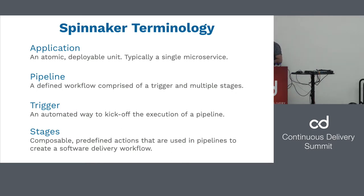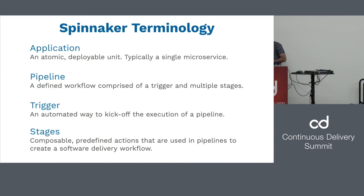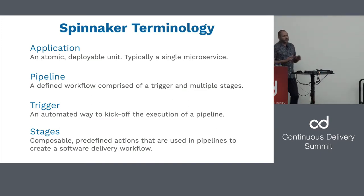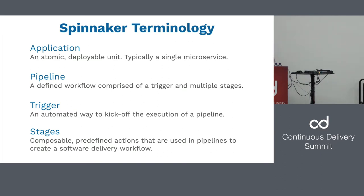A pipeline is a defined workflow of a trigger — something that automatically executes the pipeline — and multiple stages put together. The trigger is an automated way to kick off the pipeline: for example, a git commit, pushing something to an S3 bucket, pushing something to JFrog, or a container to a Docker registry. Stages in Spinnaker are different from Jenkins stages — they are predefined actions used in the pipeline to create the workflow. You don't write code for these stages; they're all predefined. You just express and configure your inputs, and Spinnaker hides the complexity so you can focus on what you need to get done.